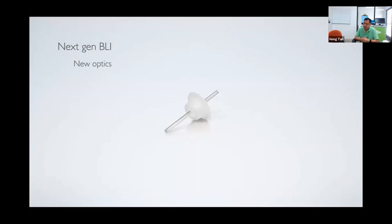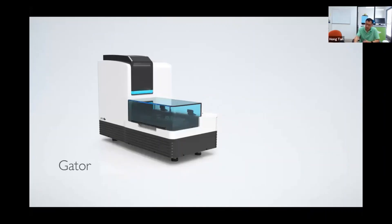We designed new optics and new chemistry that gives us much better performance than the previous generation BLI. This first Gator instrument uses standard 96 well plates and has eight channels. We can read eight assays simultaneously in parallel. It can read data at 10 Hertz, fast enough to measure small molecule reactions or fast on, fast off activities.